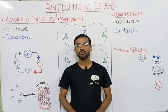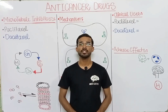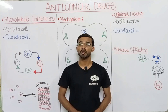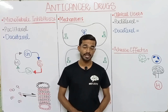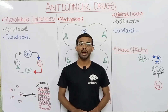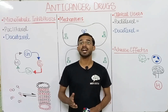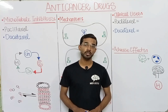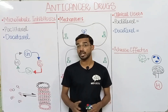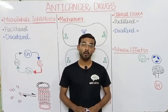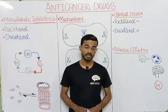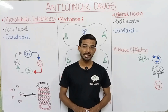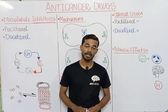Welcome to Medlecto. Today we are going to discuss anti-cancer drugs, specifically microtubule inhibitors. In the previous lectures we discussed vinca alkaloids found among microtubule inhibitors, covering three important drugs: vincristine, also known as oncovin, vinblastine, and vinorelbine.